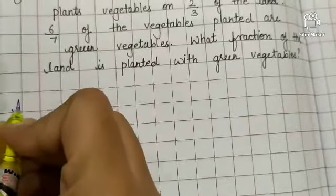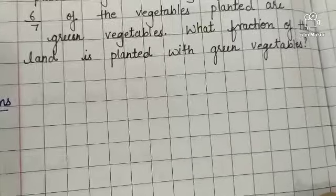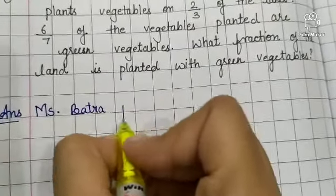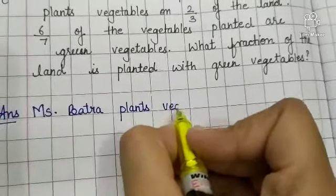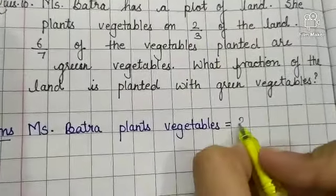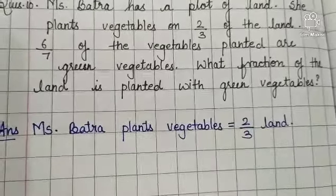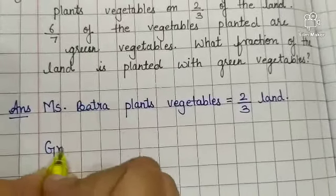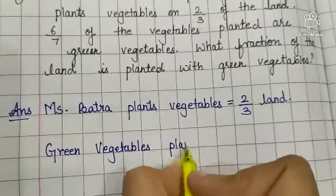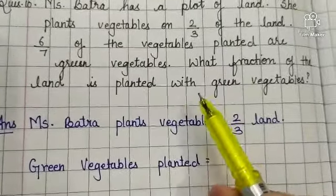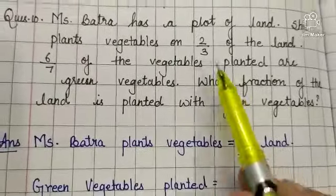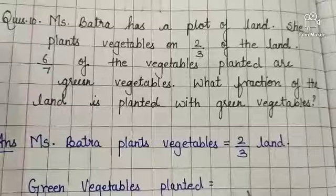Write down the answer. Mrs. Batra plants vegetables on 2 by 3 of the land. Green vegetables planted — how many were planted with green vegetables? 6 by 7 of the vegetables planted are green vegetables. So in that 2 by 3 part, the 6 by 7 part was green vegetables.